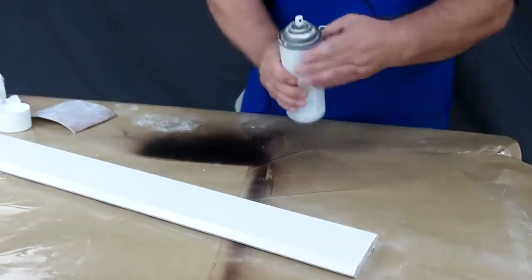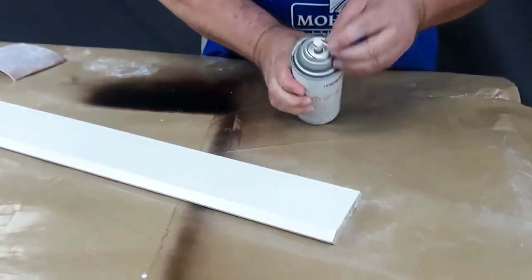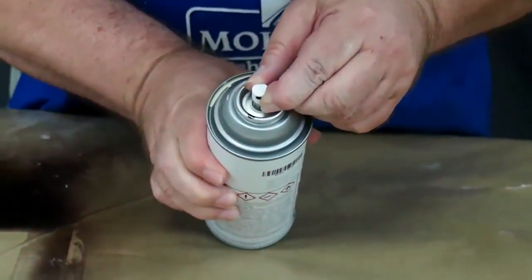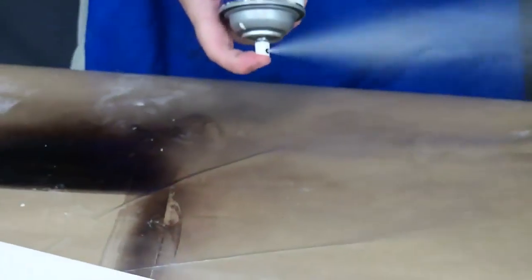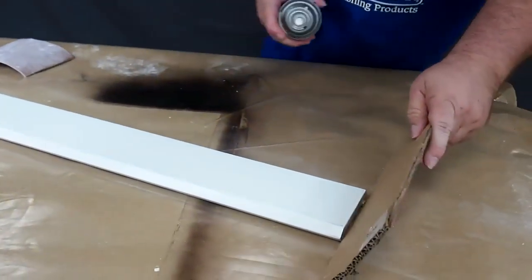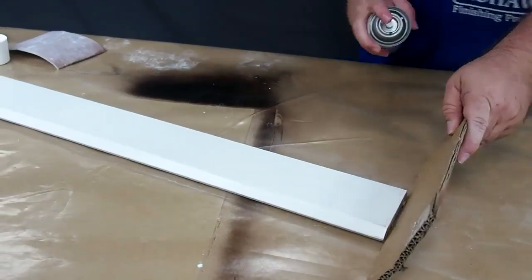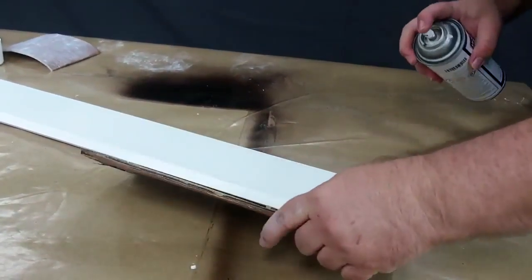For best results, line up the black mark with the spray nozzle of the can. Then turn the can upside down and give it a few sprays to make sure that the nozzle is clear before applying your paint to your product.